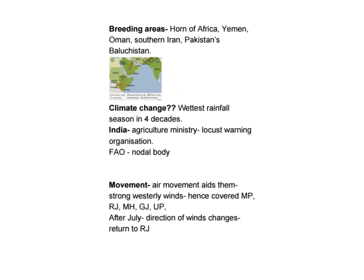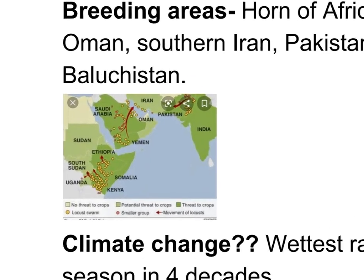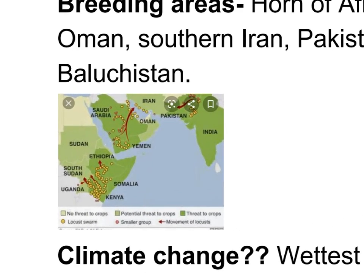Let us understand where the breeding areas are — where these insects reproduce and multiply. They mostly breed in the areas of the Horn of Africa, Yemen, Oman, Southern Iran, and Pakistan's Baluchistan areas. Looking at the map, here you have the African Horn of Africa, here is Oman, Yemen, Iran, Pakistan, and India.